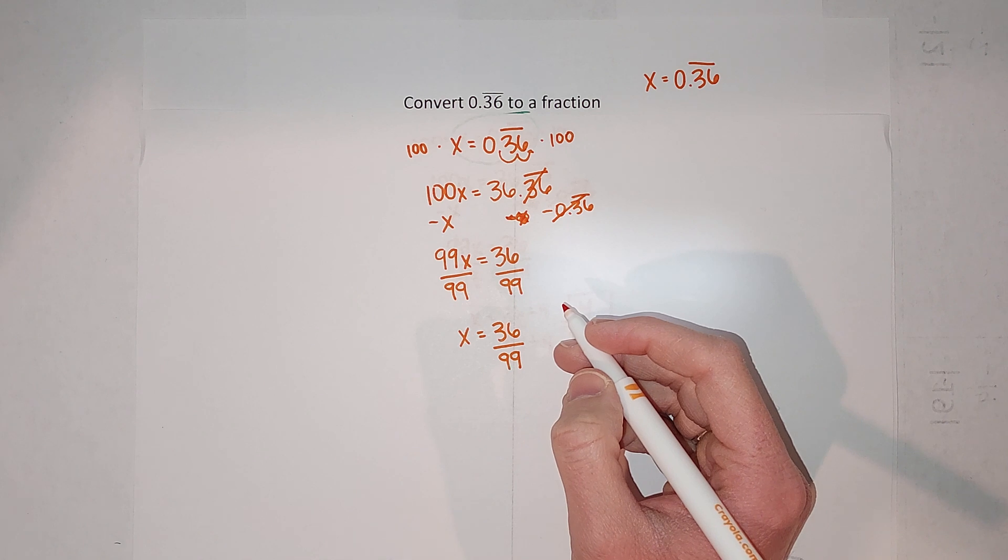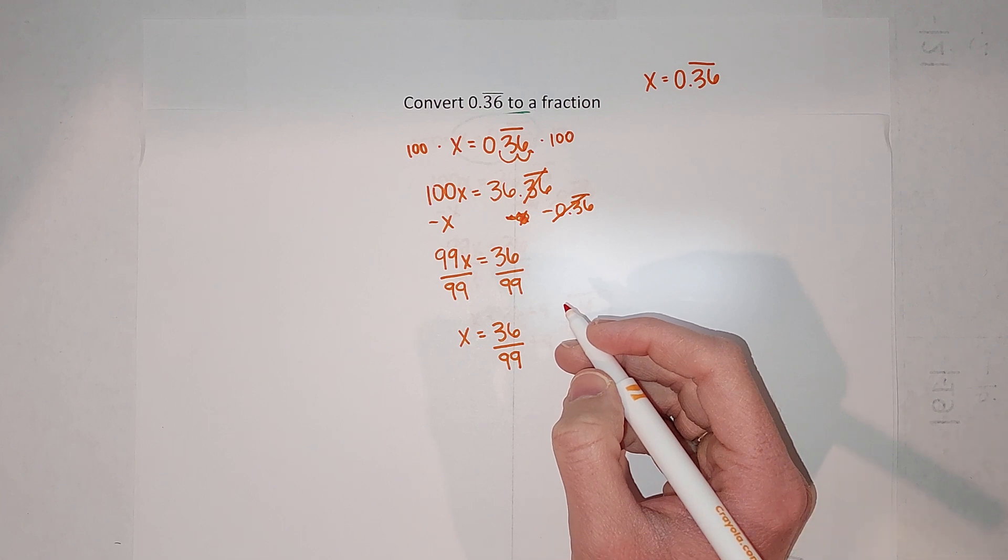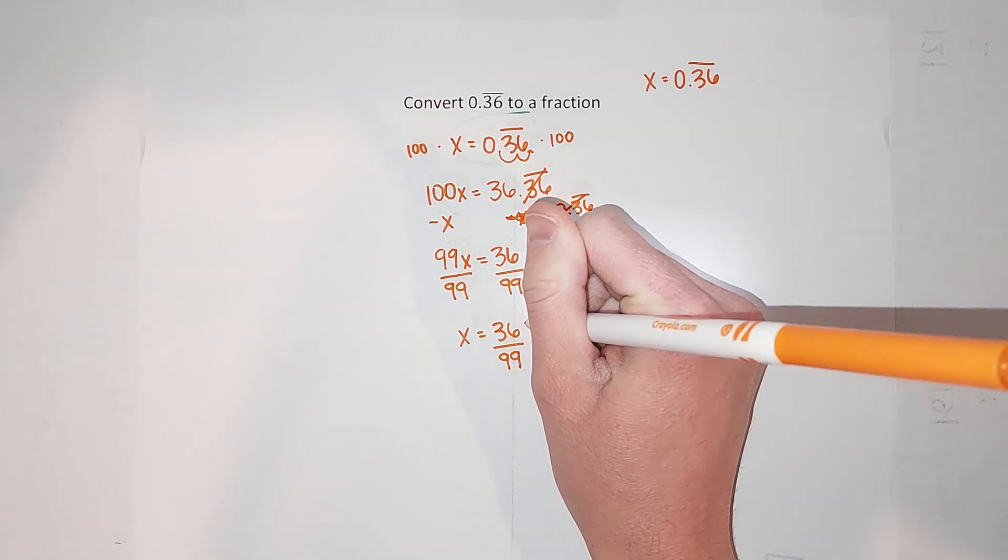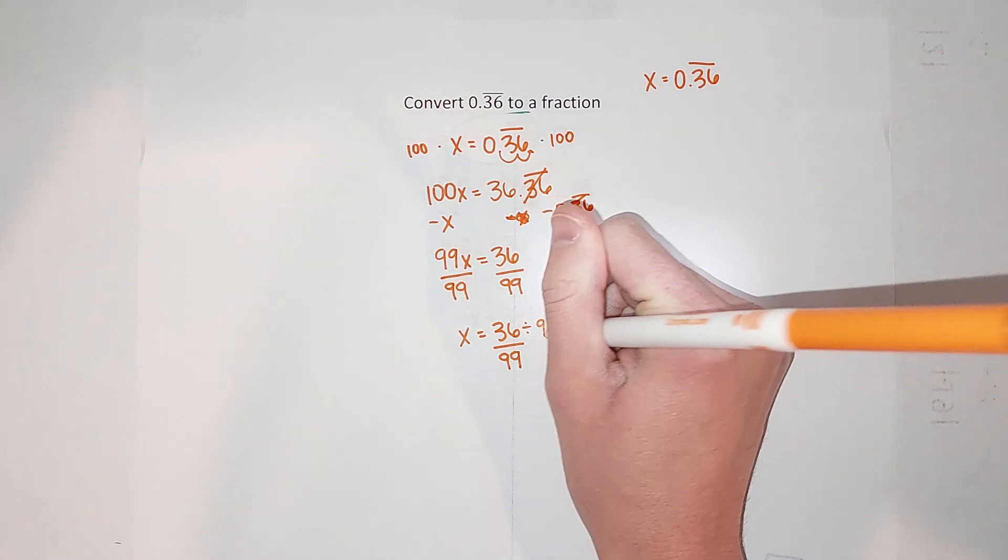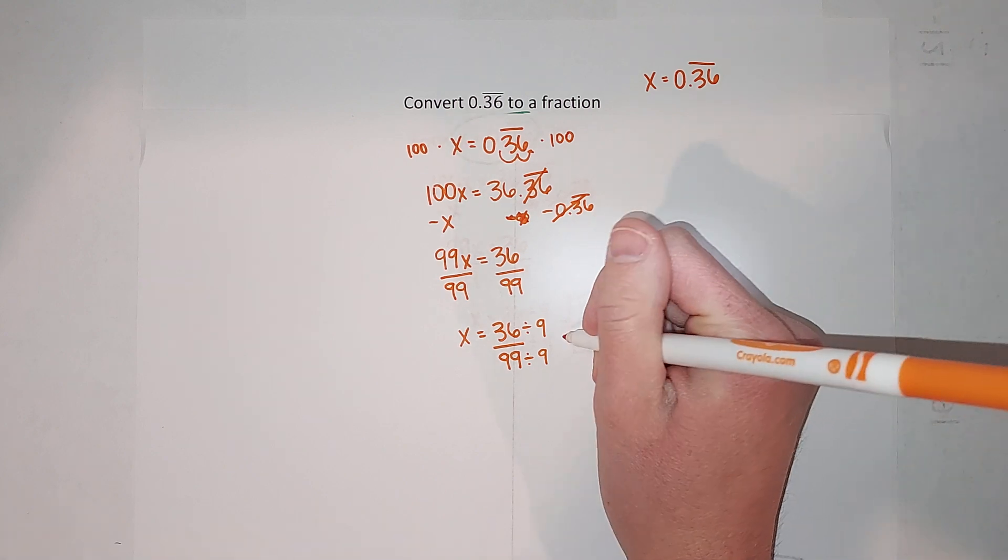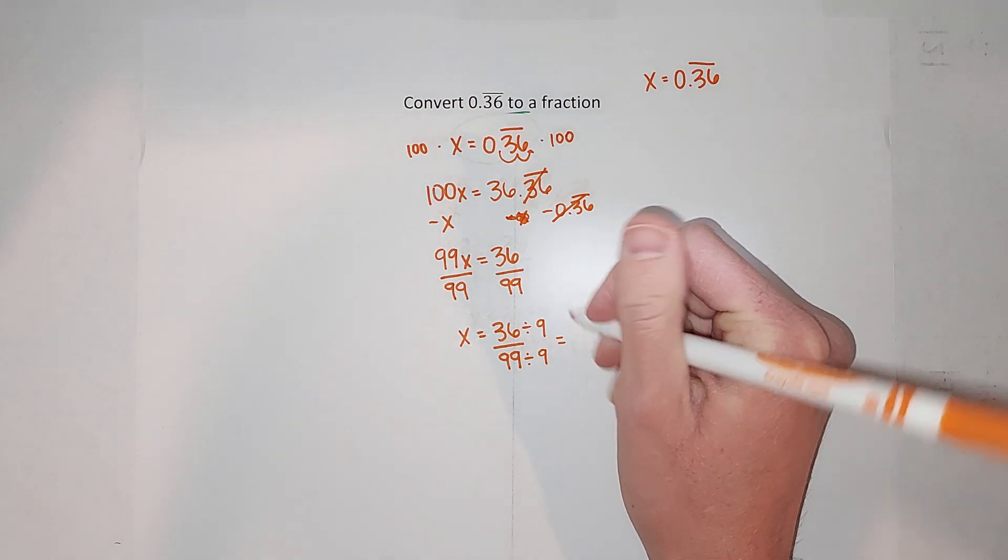And typically, I would say most teachers want it simplified. So both numbers I notice are divisible by nine, so I'm going to divide by nine on top and bottom. If you need a refresher on simplifying fractions, I'll link a video, but when I divide these, I end up with 4/11ths.